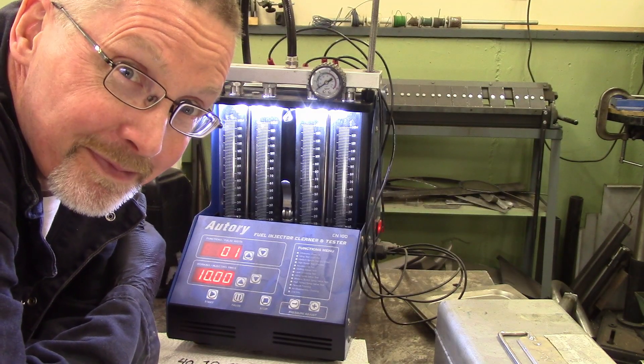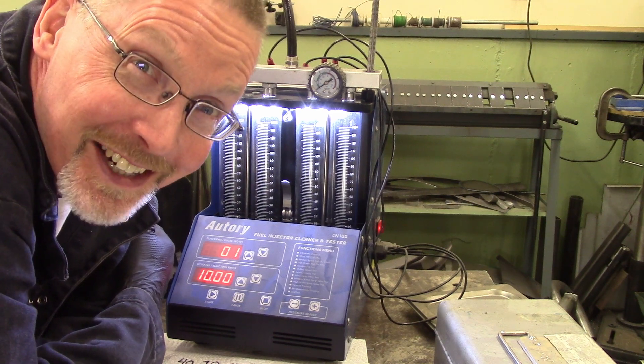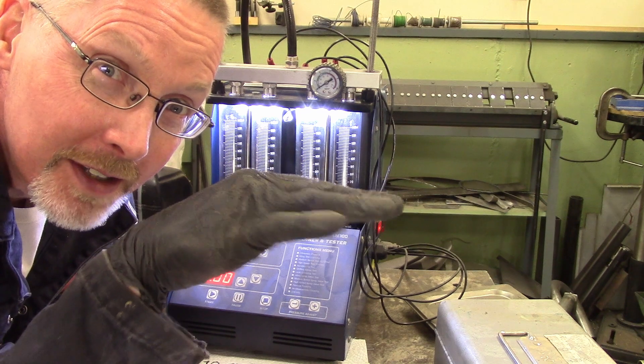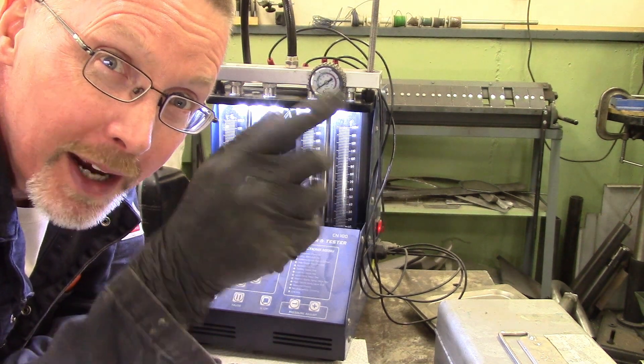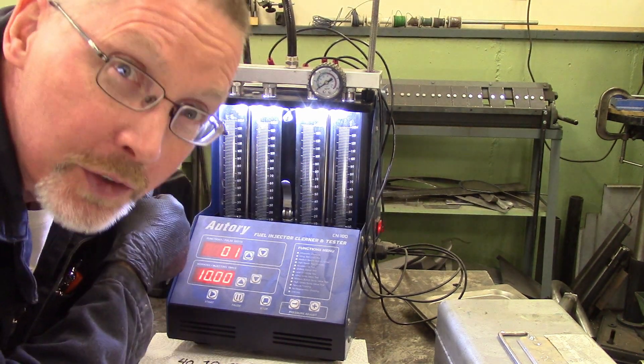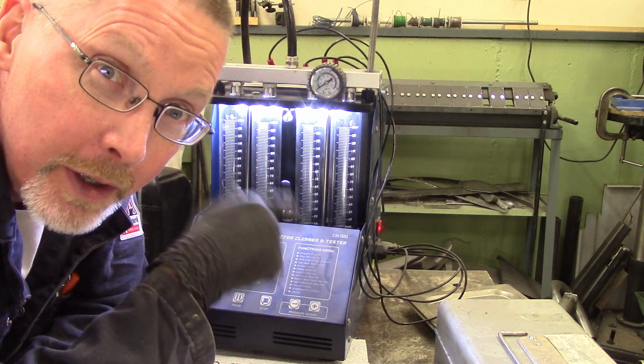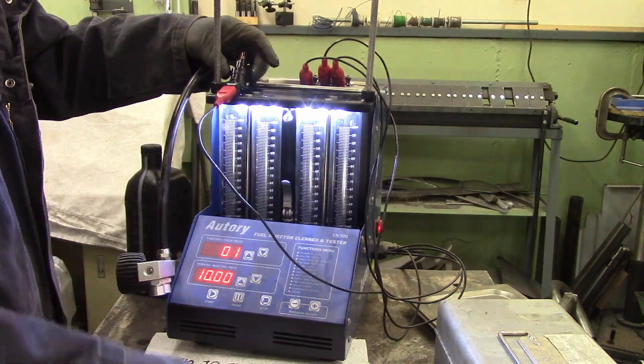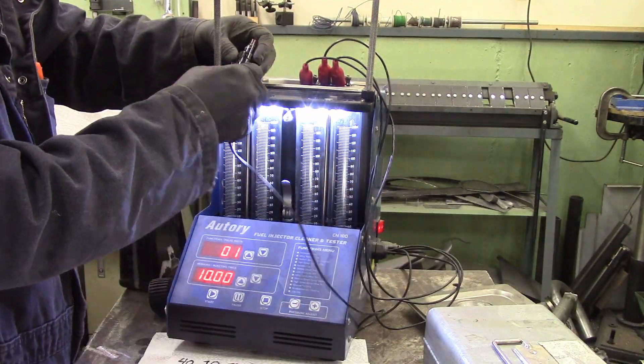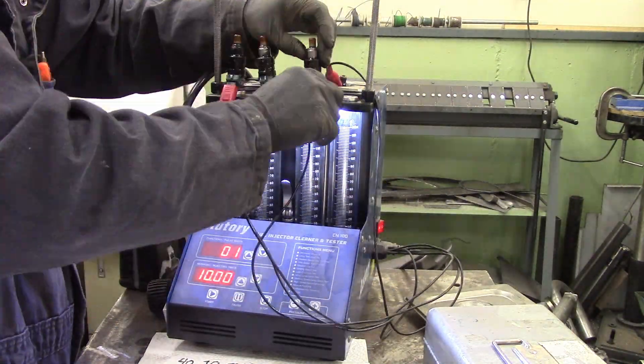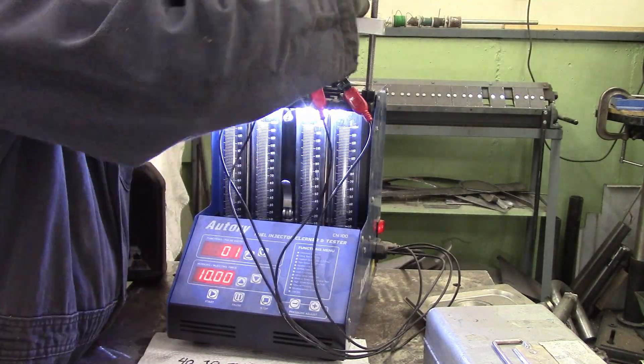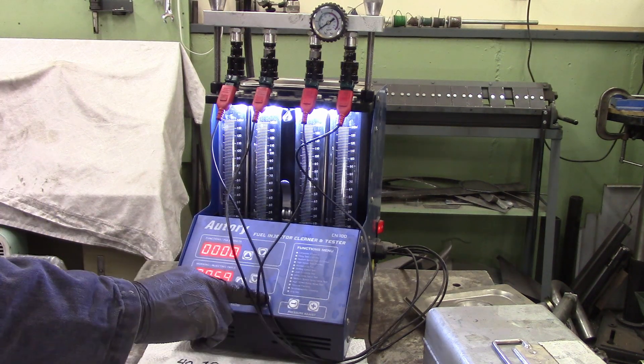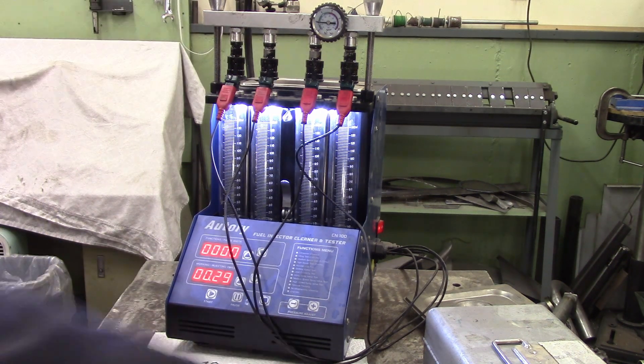I let this run for about two hours just because I want to make sure. I lay them on their side for a while, then ultrasonically clean them, and then I set them back up on end. Now we're going to reverse flush them, run them backwards through here, and then we'll give them a little test and see how they do. You just hook them up backwards, so it pukes everything out of the injector that got collected inside the injector. Usually a good idea.